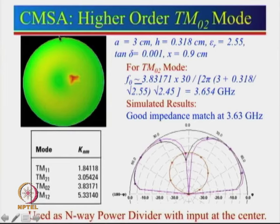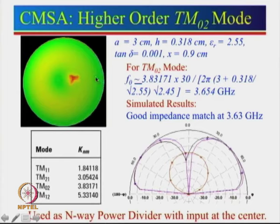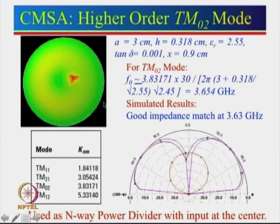For TM02 mode, the 0 implies no variation along the circumference — the current distribution color remains almost the same all around. The 2 implies 2 half-wavelength variations along the diameter: current starts from a low value, rises to maximum, drops to 0, rises to maximum again, then back to 0. Since current is 0 at the edge, voltage is maximum and uniform all along the circumference — both the inner and outer maxima differ only in phase by 180°, but have the same amplitude.